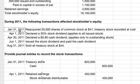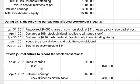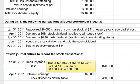For the January 31st, 2011 transaction, we debit treasury stock and credit cash for $820,000. The reason is this is for the 20,000 shares they bought back at $41.00 per share — 20,000 times $41.00 equals $820,000. Since cash was paid out, you credit cash.